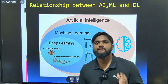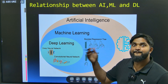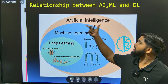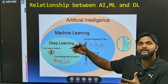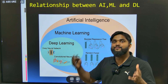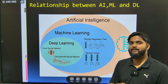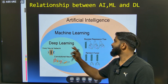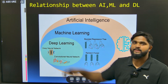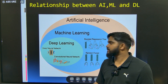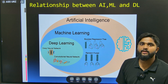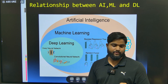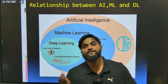Now let's see the relationship between AI, ML, and DL. AI is a domain, and inside AI we have machine learning as a sub-domain. Inside machine learning, we have deep learning as another sub-domain. Deep learning includes deep neural networks and convolutional neural networks.